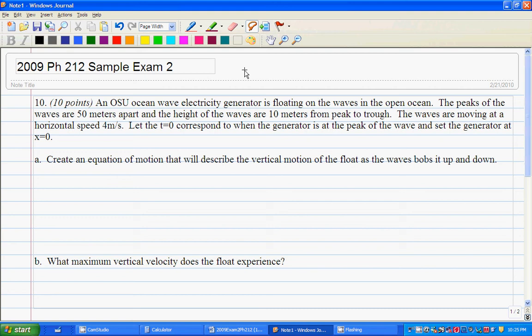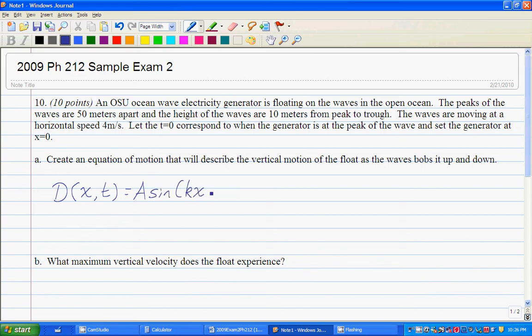I would try to write down the general form of the wave equation to start out. Remember that the general form is that the displacement of the wave generator, in this case, as a function of position and time, is going to equal the amplitude times sine of kx subtract omega t add phi naught. Next thing I would do is try to draw a picture of what's going on.